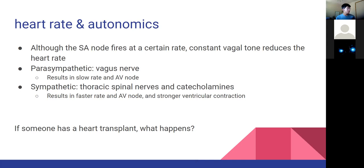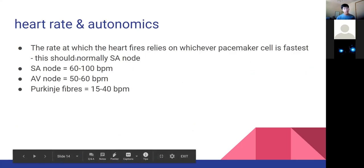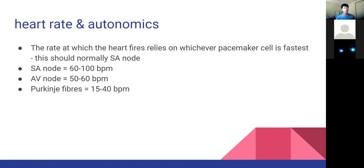A student asked: is the rate at which the heart fires different to heart rate, since heart rate is dependent on ventricular contraction rate? For the most part, the rate at which the heart fires will be the same as the heart rate. In a perfectly normal functioning heart at approximately 60-100 BPM, the SA node is the fastest throughout the entire heart, so it also dictates the rate at which the ventricles fire. If it's misaligned, that's a pathology we'd see in an ECG. In a normal individual, the rate at which the SA node fires should be the same as the ventricular contraction rate.